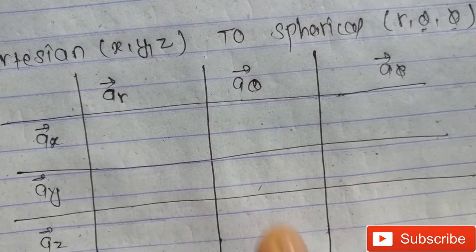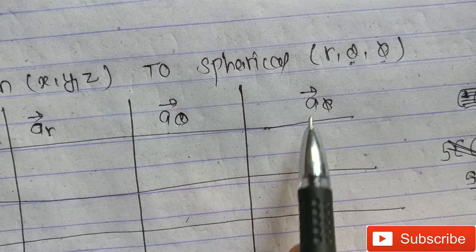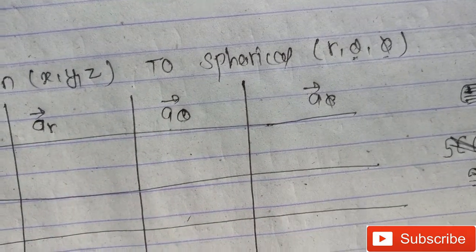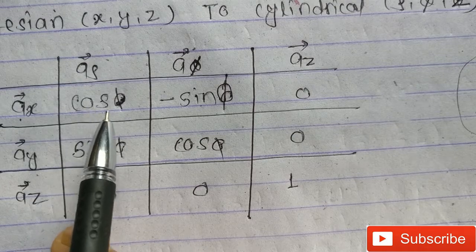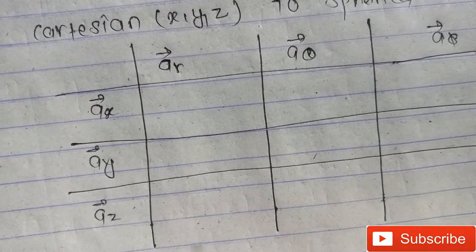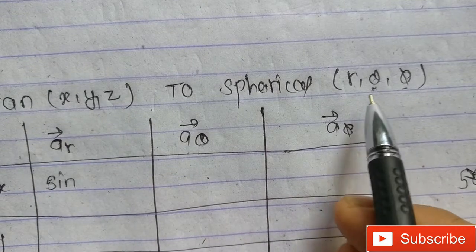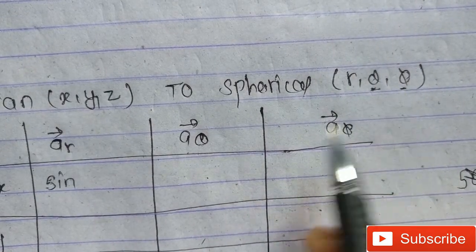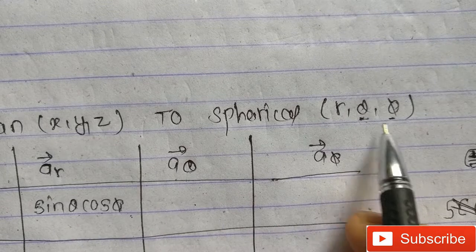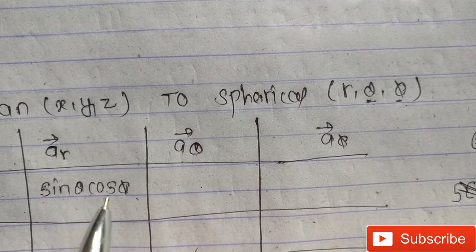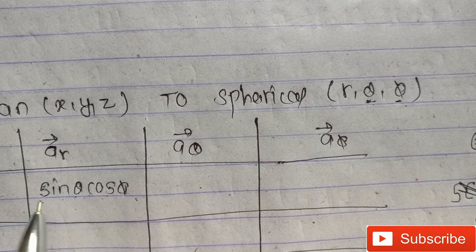For Cartesian to spherical, or specifically spherical to Cartesian, same as the previous one: place the Cartesian values in the column and the spherical values in the row. In this trick, we took cos in the first position, so now we take sine — that means sine theta. Sequentially: sine theta, cos phi. Our previous formula started from cos, so now we start from sine, then cos phi.